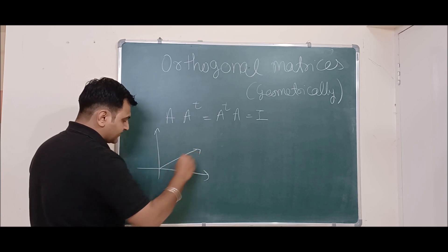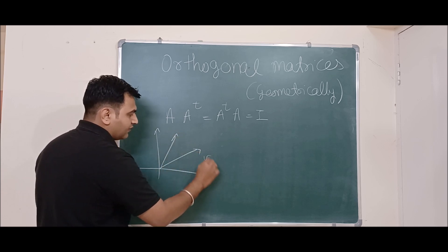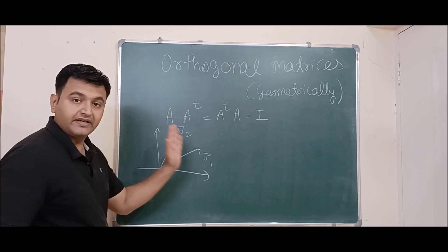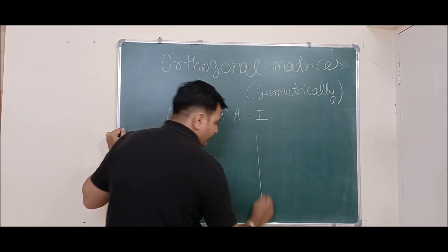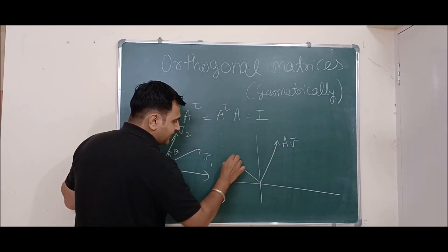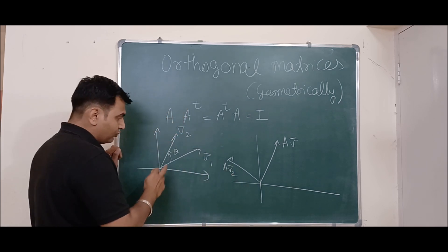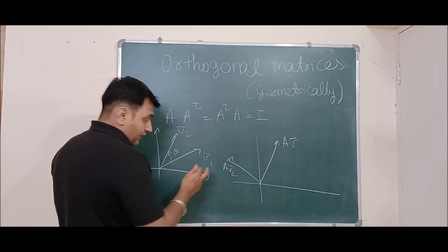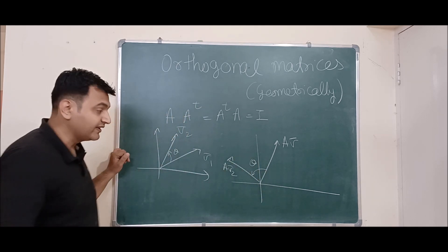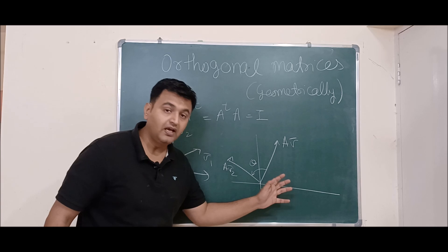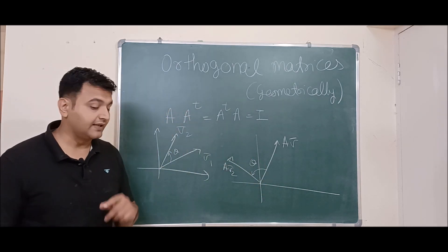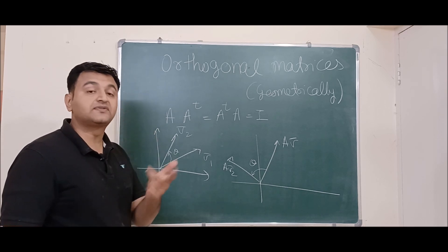Let me explain this geometrically. If you are in R² and you have two vectors v₁ and v₂, with theta as the angle between them, and you apply an orthogonal matrix A to them, you get Av₁ and Av₂. If A is an orthogonal matrix, the angle between Av₁ and Av₂ will also be theta — meaning angles are preserved under orthogonal transformations.